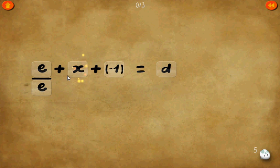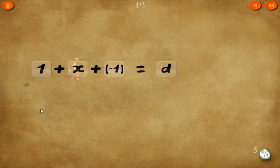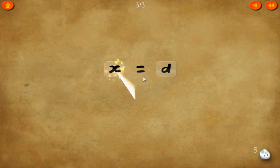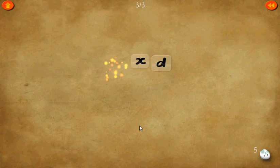Level 5. e over e plus x plus negative 1 equals d. Of course, e over e just equals 1. 1 plus negative 1 cancels to 0. Therefore x equals d.